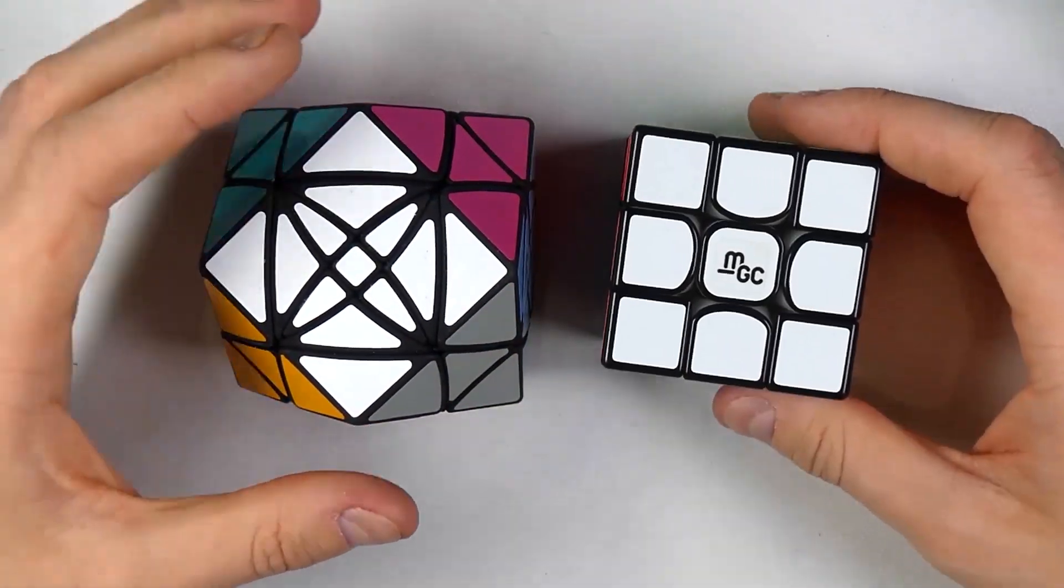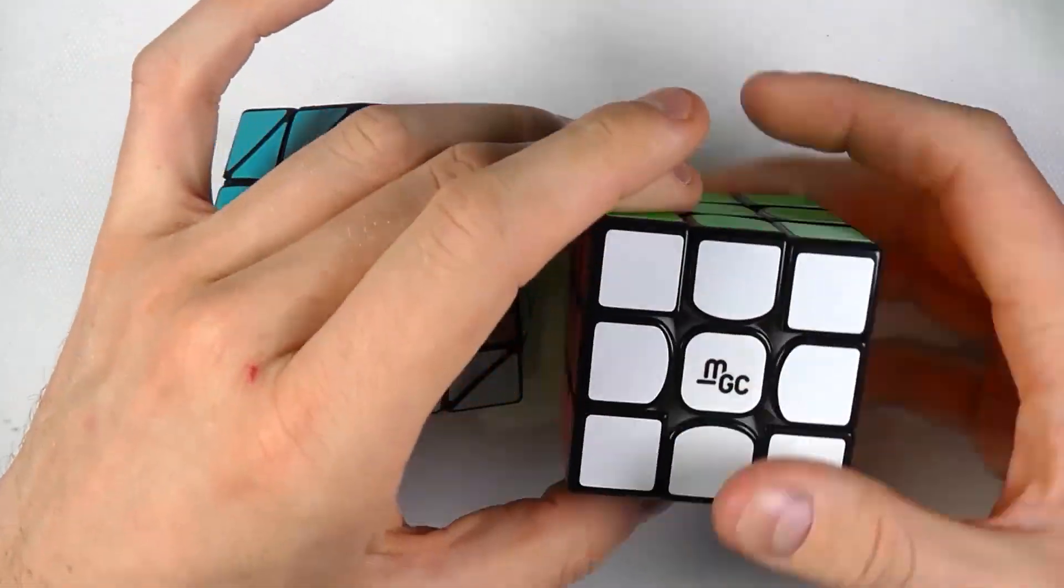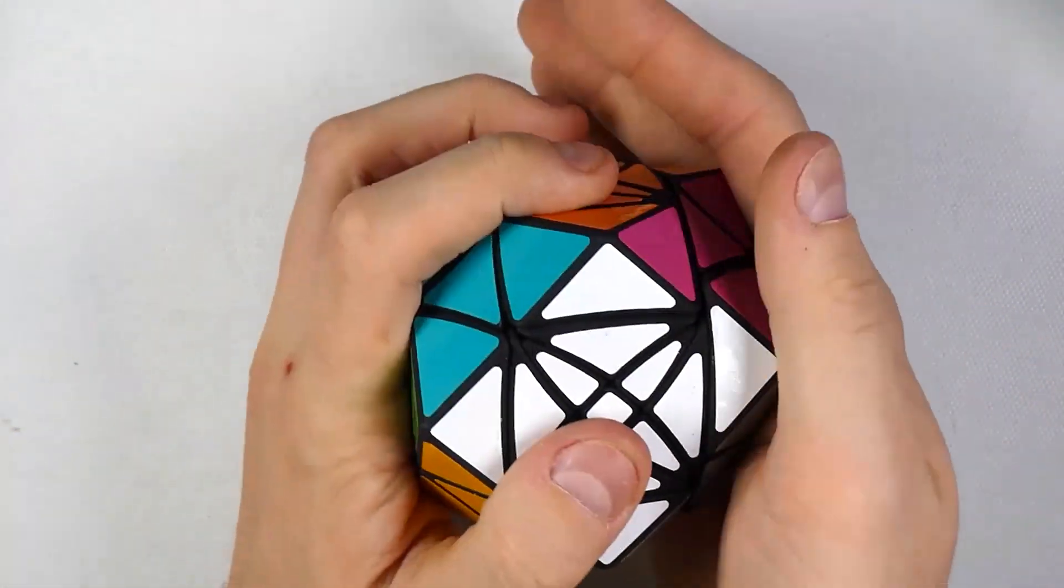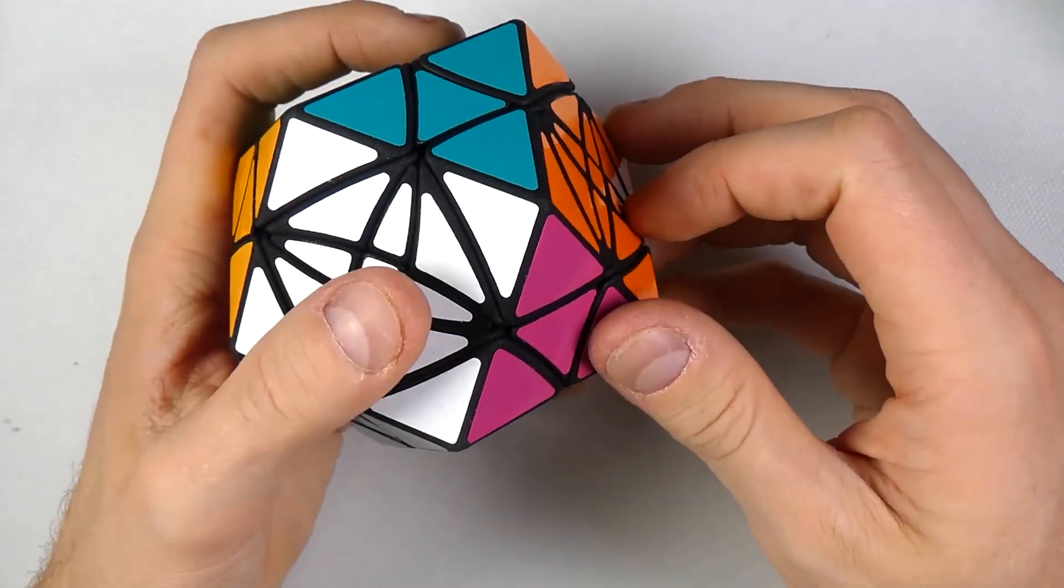And there's also the turns of a 3x3 Rubik's cube, a classic Rubik's cube like this. And this, right there.